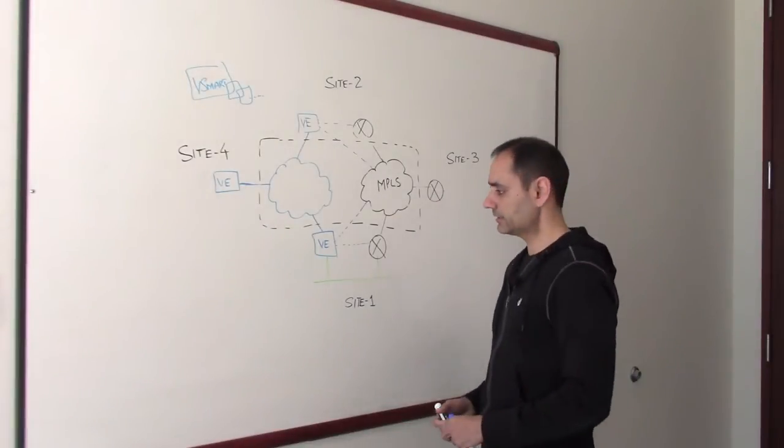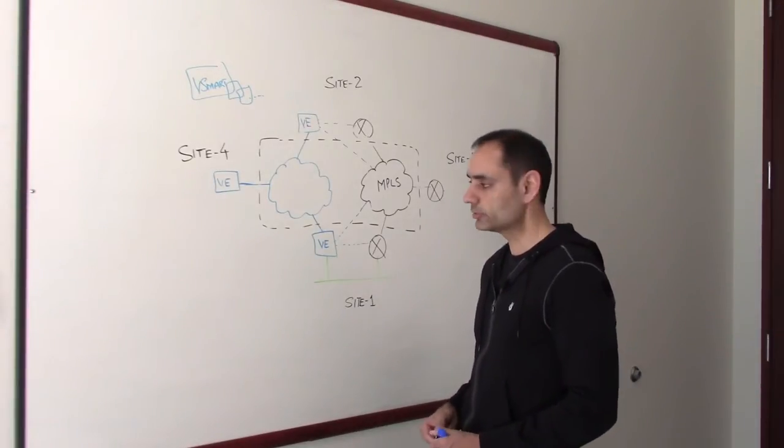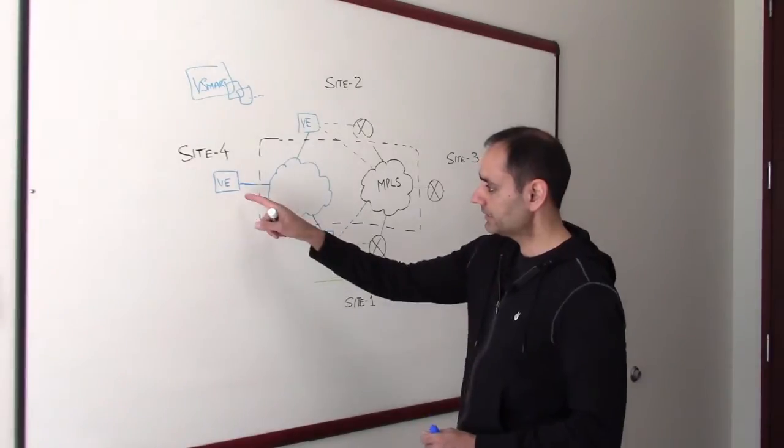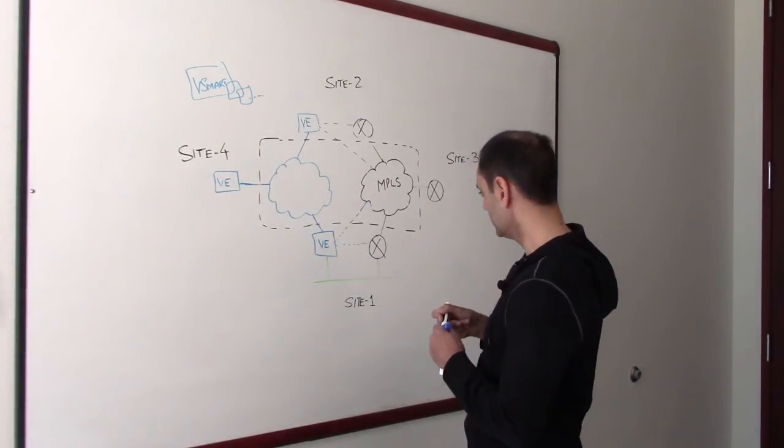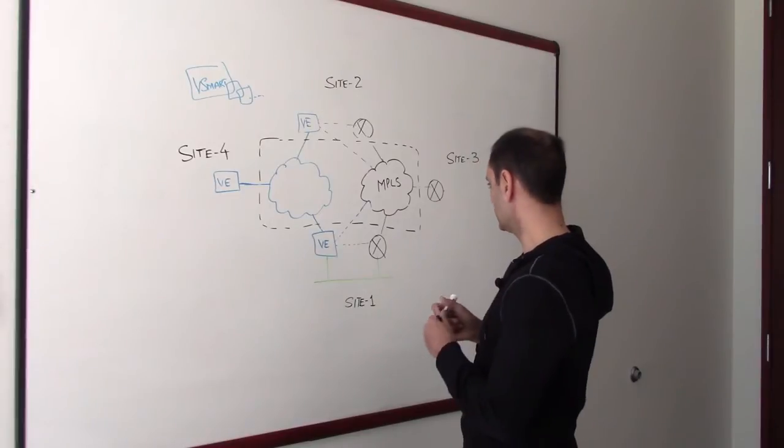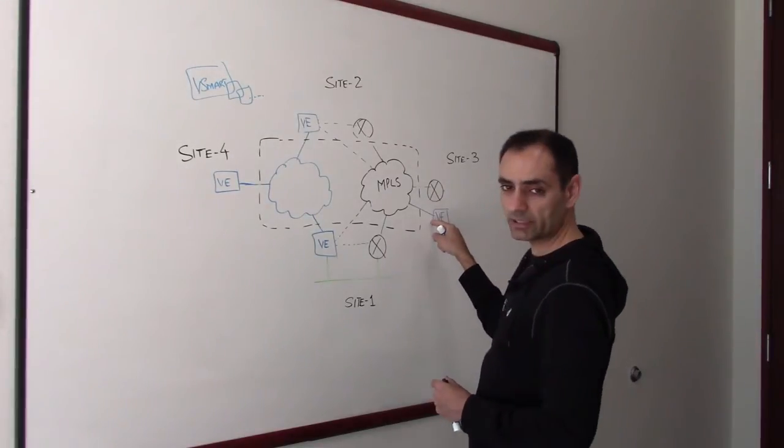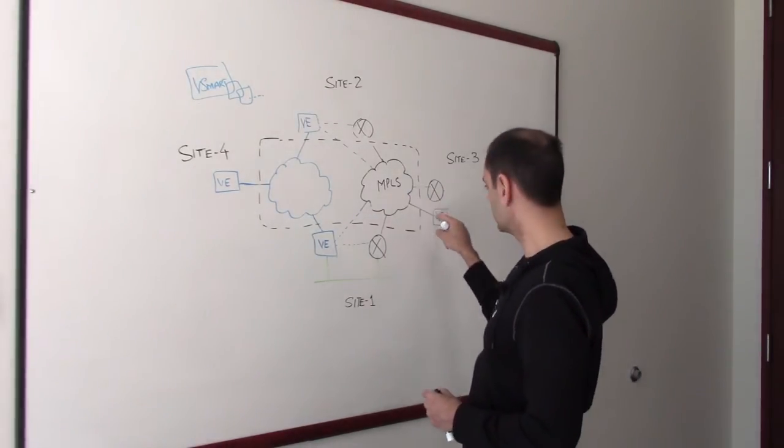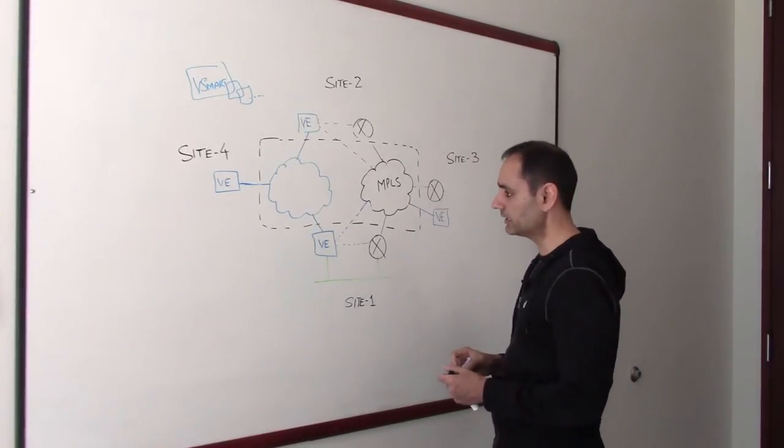Another thing to consider here is how you connect between sites which are on different transports. Let's say you have a site which is connected to broadband, you have a site which is connected to MPLS. Let's say we put a V-Edge here also to orchestrate the overlay. And now again, this V-Edge can be connected directly to MPLS or it could connect to the existing router and use it as a transport to MPLS.